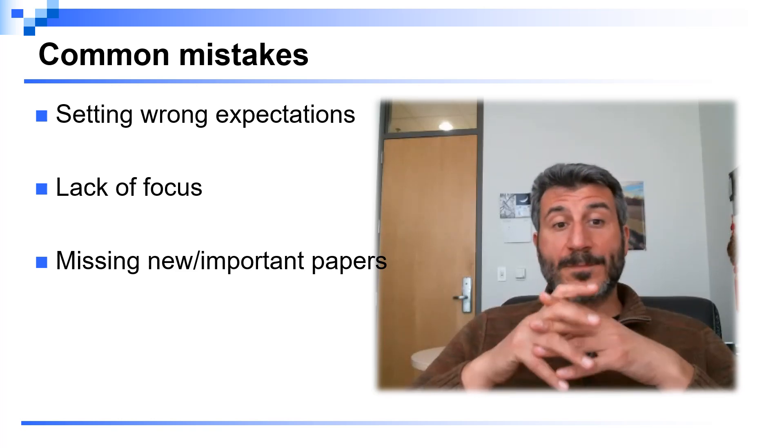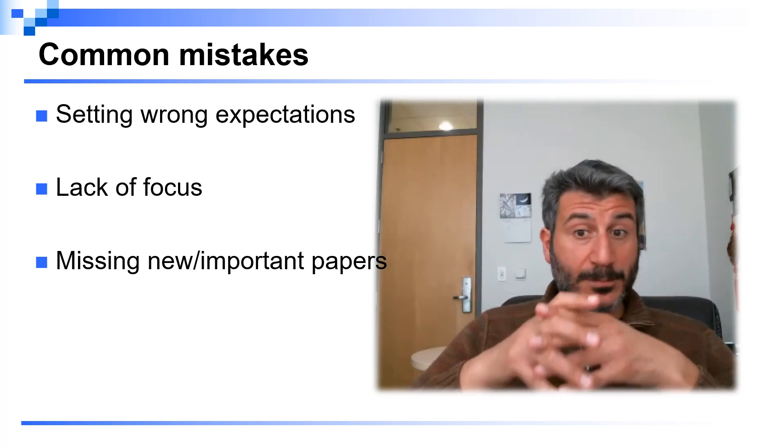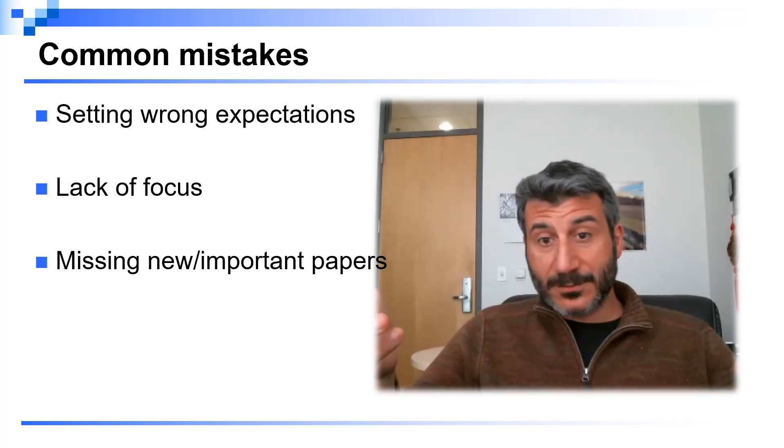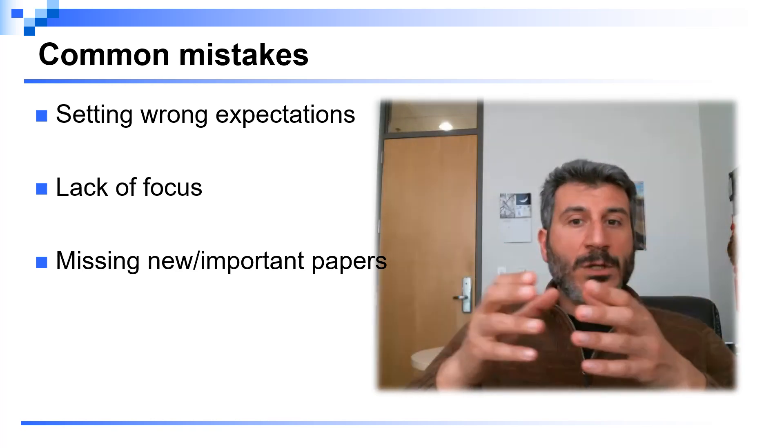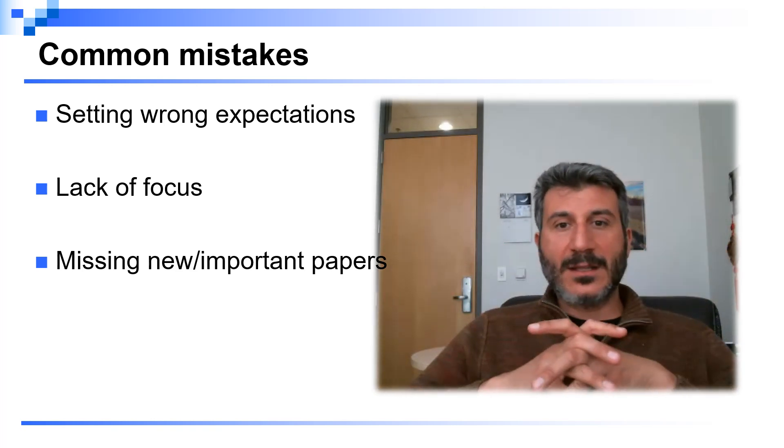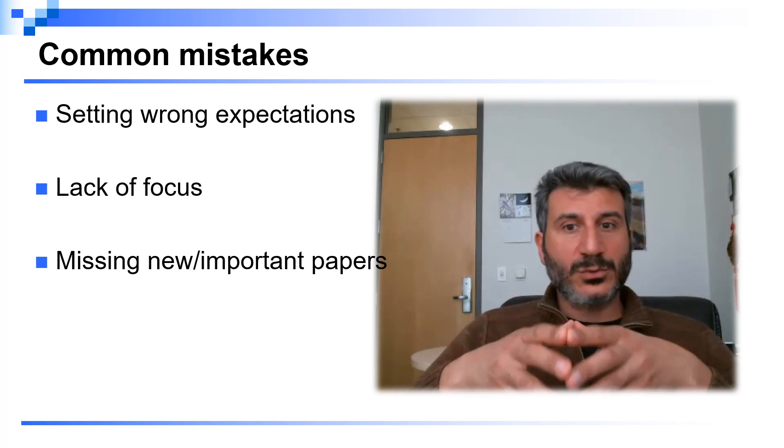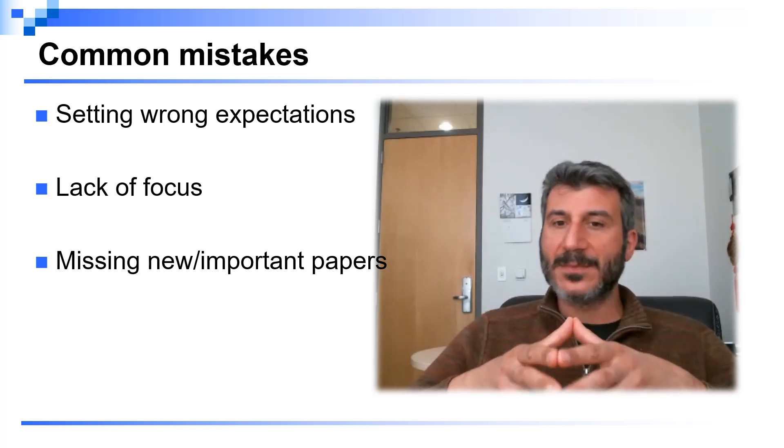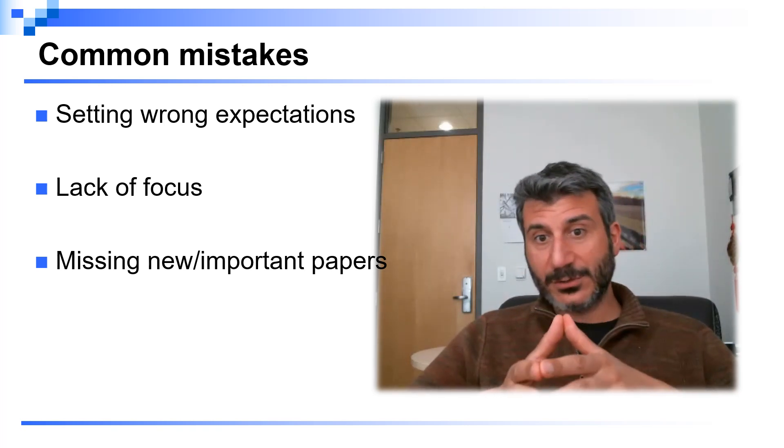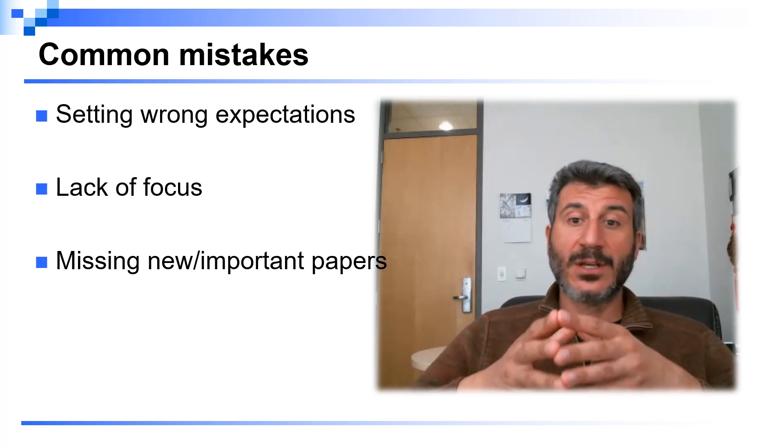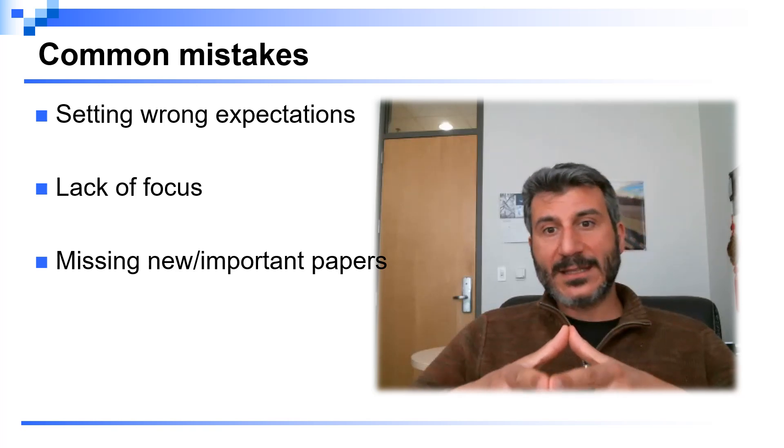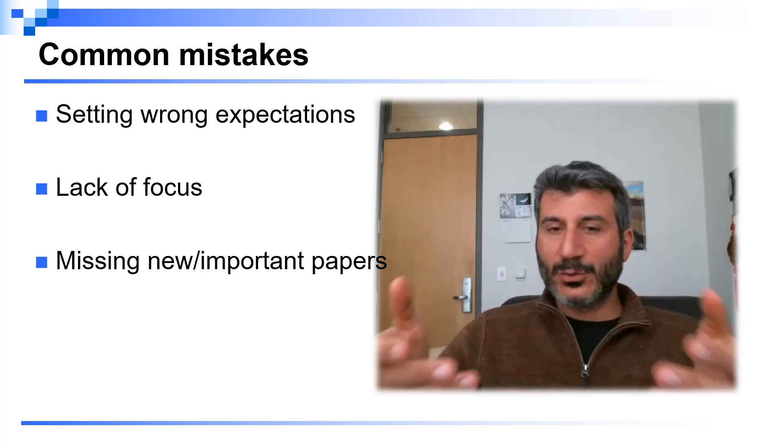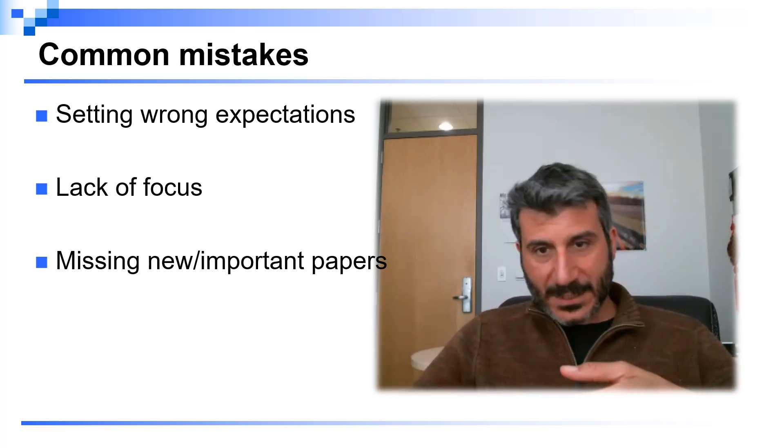Sometimes also it can happen to miss some important papers, either because you didn't find them or because you forgot to cite them. Well, what you don't want to happen is that you study a problem, you give a solution, and then you do not cite a paper that clearly was studying a similar problem or providing a similar solution. Because if the reviewer finds this out, it's very easy to get the comment that this problem has been already studied before, these solutions already exist, and so the paper can be rejected.